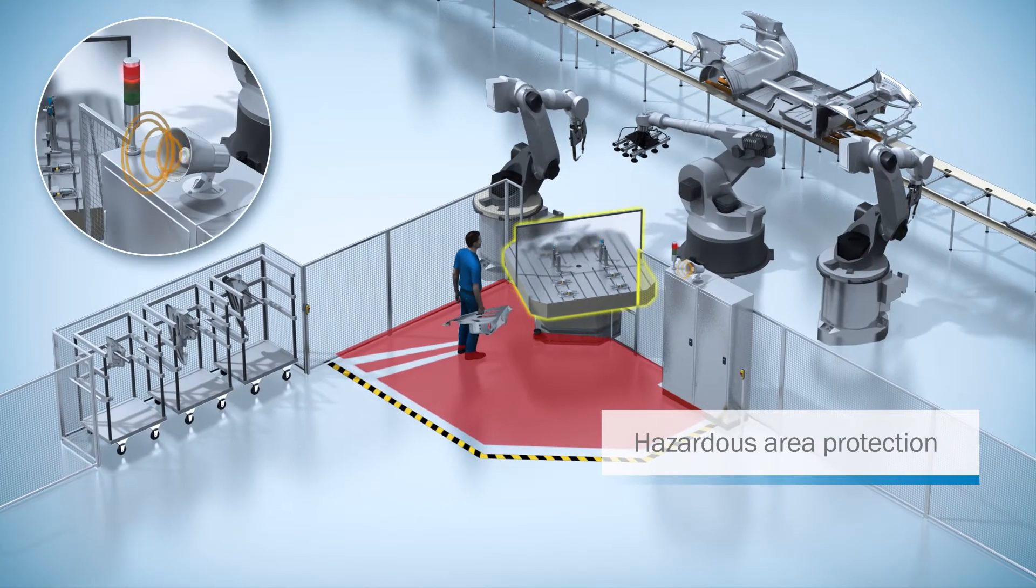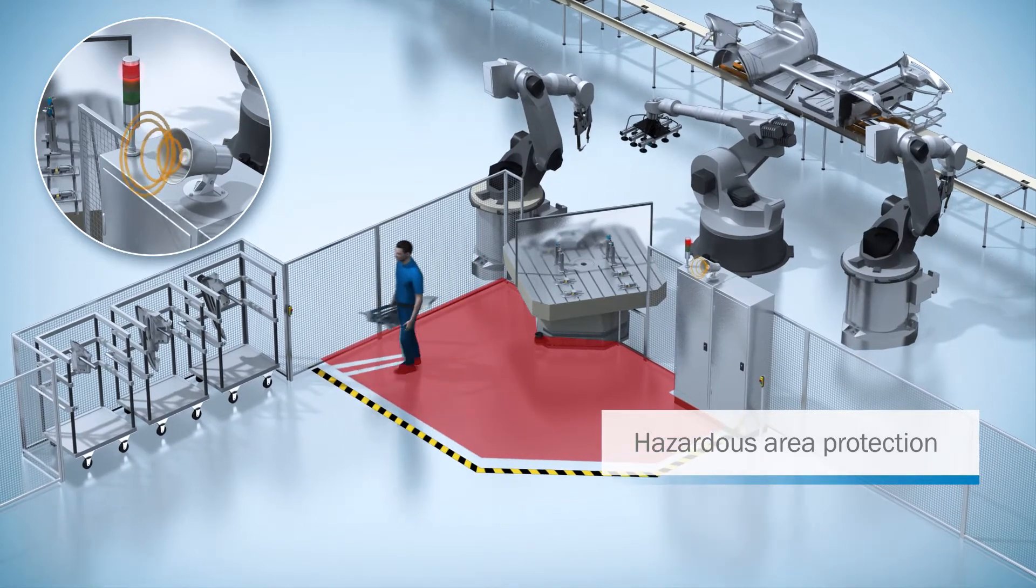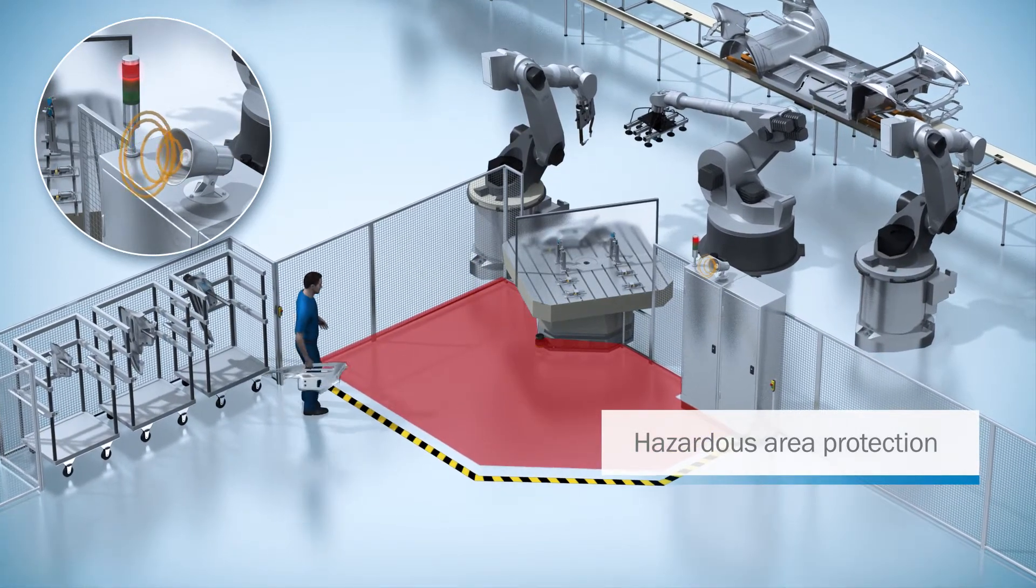When a person enters the protected area, MicroScan3 sends a signal to the control system and hazardous machine movements are stopped immediately.